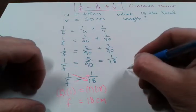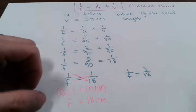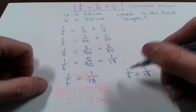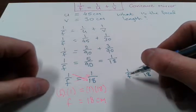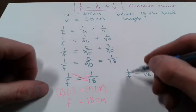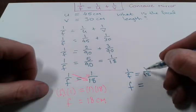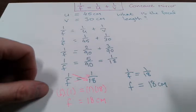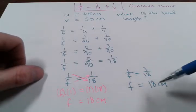Or the other way you could do it: if you have 1 over F equals 1 over 18, I could do 1 over this side which would give me F. So 1 over 1 over F gives me F, and 1 over 1 over 18 gives me 18 centimeters. Either way you get the same answer, so it doesn't really matter. That gives you the focal length.